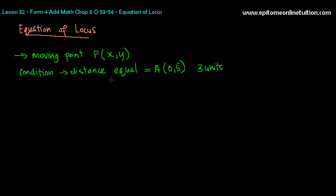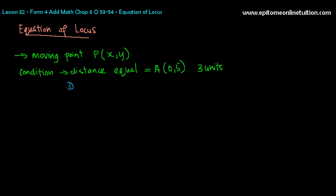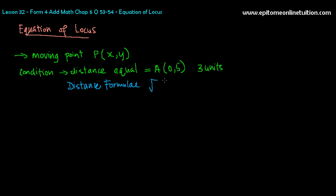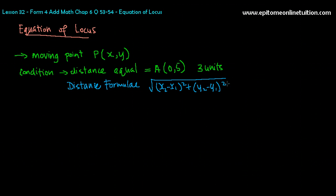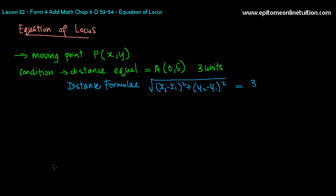Generally, the condition will be given in the form of distance. If this is the case, then you form your equation using the distance formula. The distance formula would be: the square root of (x₂ minus x₁) squared plus (y₂ minus y₁) squared equals something — in this case, probably 3. This is an example of how the locus moves so that the distance equals something. Of course, the condition can change a little bit — the distance could be equal to point A and point B — but basically you use the distance formula to form the equation. That's one condition, and it's a very, very common question.